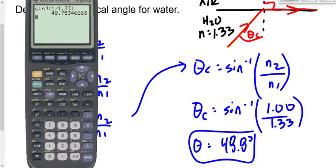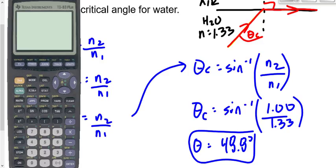Before we move on, note that it's easy to accidentally flip the indices of refraction — putting 1.33 over 1 instead of 1 over 1.33. Try it on your calculator right now: the inverse sine of 1.33 divided by 1. Your calculator will tell you if you've made a mistake, because if you flip them and the value exceeds 1, the inverse sine is undefined. There are only two variables to substitute, so if you mix them up your calculator catches it for you.